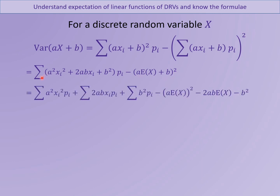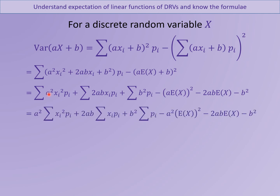Expanding fully, we multiply out (AX plus B) squared, multiply by Pᵢ, and split into three separate summations. We also expand the squared expected-value term, being careful to distribute the minus sign across all three parts. Pulling constants A², 2AB, and B² to the front of their respective sums, we then recognise that Σ Xᵢ²Pᵢ is E[X²], Σ XᵢPᵢ is E[X], and Σ Pᵢ equals 1.